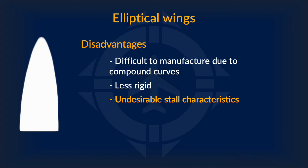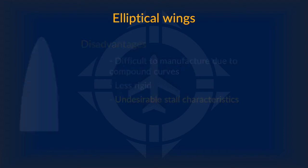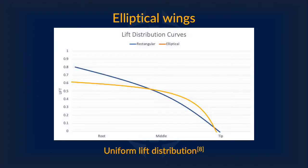However, elliptical wings have great disadvantages that greatly limit their usability. First, they are very difficult to manufacture due to their compound curves. They are also less rigid compared to other wings and don't have much strength. Worst of all, they have undesirable stall characteristics. To explain this, however, we must first look at lift distribution.